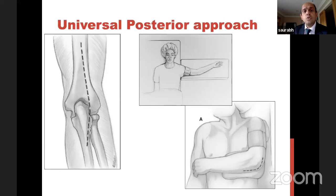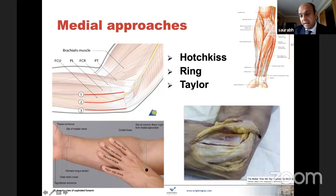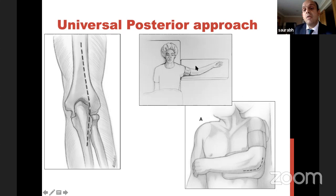My practice: patient is supine on an armboard. Arm comes across the chest — that's the posterior incision, curved slightly towards the radial side to avoid ulnar nerve injury. Go through skin and fat, make two big thick flaps. Inside, you can access medially and laterally. I always do a universal posterior approach; once done, the arm comes back onto the armboard and you and your assistant can sit and do your lateral or medial approach very comfortably.